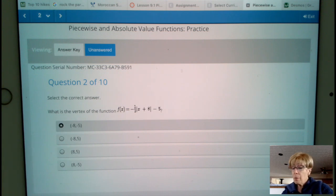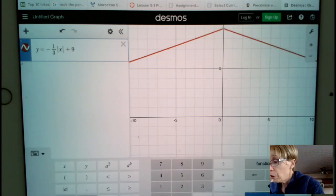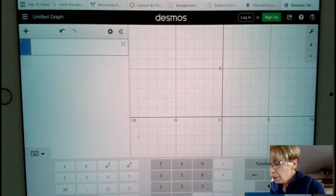Arrow, absolute value of x plus 8, arrow, and then minus 5.